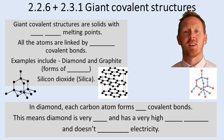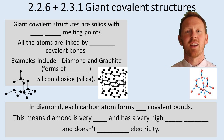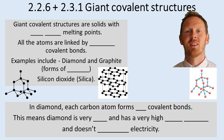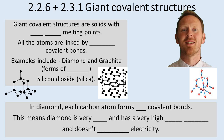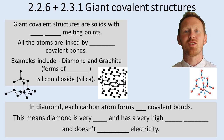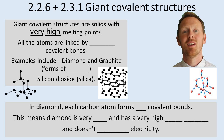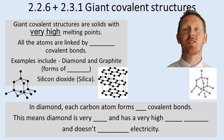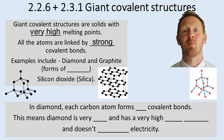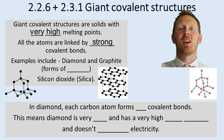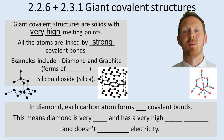2.2.6, giant covalent structures. 2.3.1, diamond. Giant covalent structures are solids with very high melting points. All the atoms are linked by really strong covalent bonds — remember the shared pair of electrons that is a covalent bond.